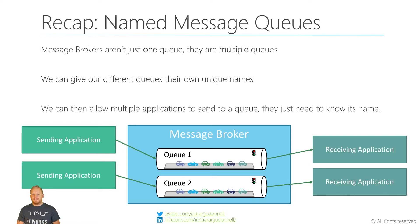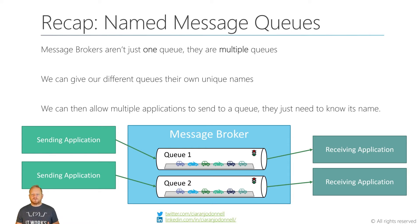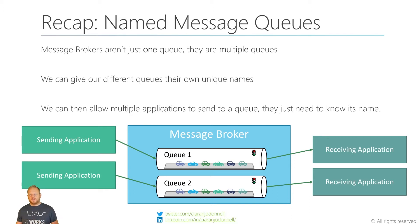To recap our last video, where we learned about message brokers and message queues, we looked at how a message queue is basically like a one-lane road, where everything that enters it has to line up, and when the road opens at the other end, they leave in the same order they entered. So we're talking about a first-in, first-out kind of structure.